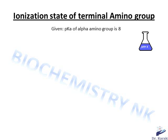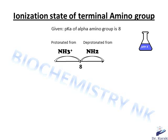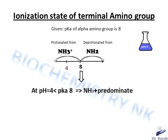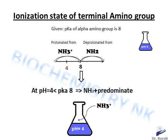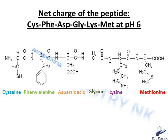Let's take for example the terminal amino group. If we want to determine its ionization state and its charge at pH 4, first we draw an axis; in the middle of it we put the given pKa, which is equal to 8. When the pH is lower than the pKa of 8, the protonated form NH3+ predominates in the solution. If the pH is higher than the pKa, the deprotonated form NH2 predominates. At pH 4, which is lower than 8, the protonated NH3+ form predominates, and the charge is positive.